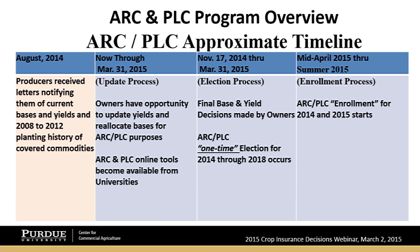One final point: at the end of last week, USDA's Farm Service Agency extended the deadline for updating yields and reallocating bases. Previously due last Friday, that deadline has been pushed back to the same date as the election choice between ARC and PLC programs. So there are a few more weeks if you need to update yields or reallocate base acreage with respect to the farm program.